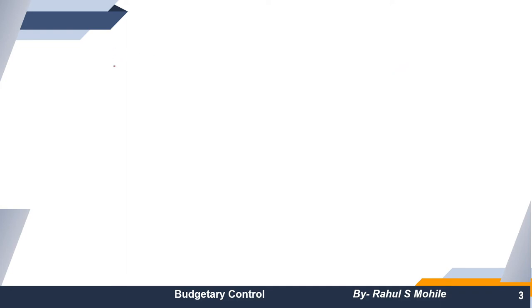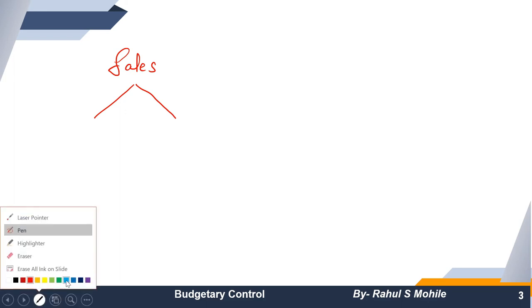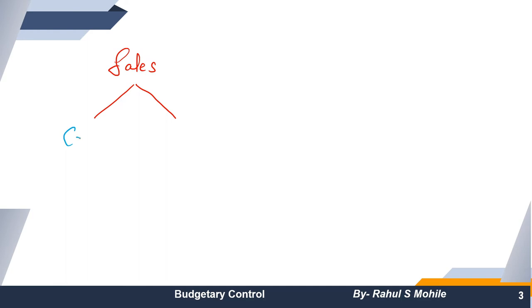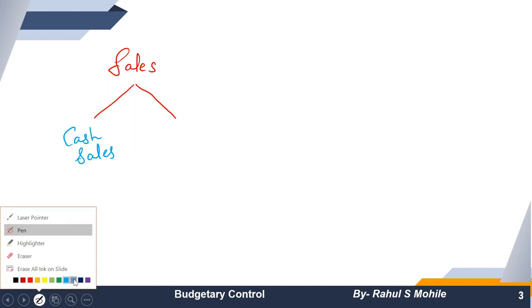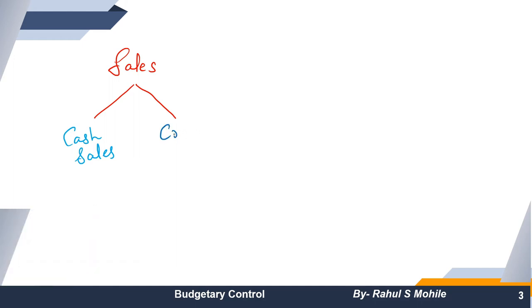जैसे कि अगर हम sales की बात करें — sales हमेशा दो parts में divide होती है. एक होता है cash sales और दूसरा है credit sales.